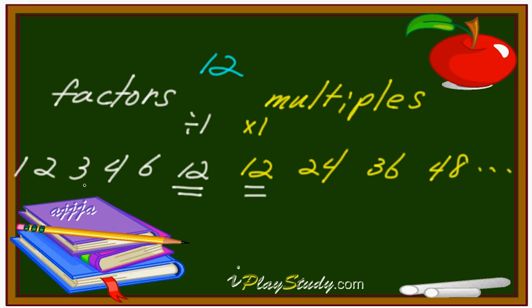That means we have one, two, three, four, six, and twelve. Oh man. Six factors we have. What about multiples? Uh-uh. Endless. This one keep on going. Okay. Okay. All right.